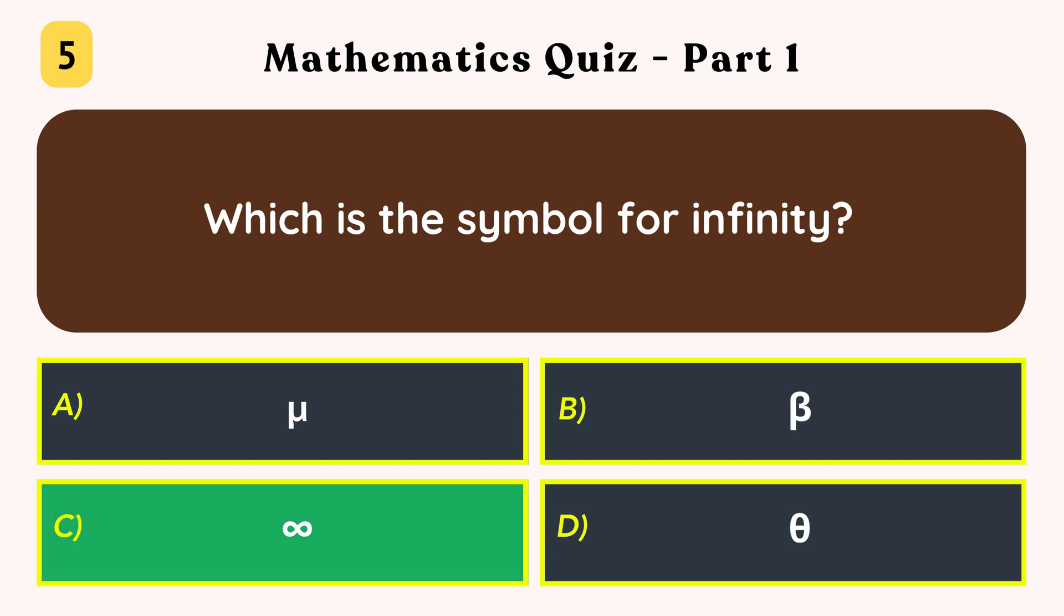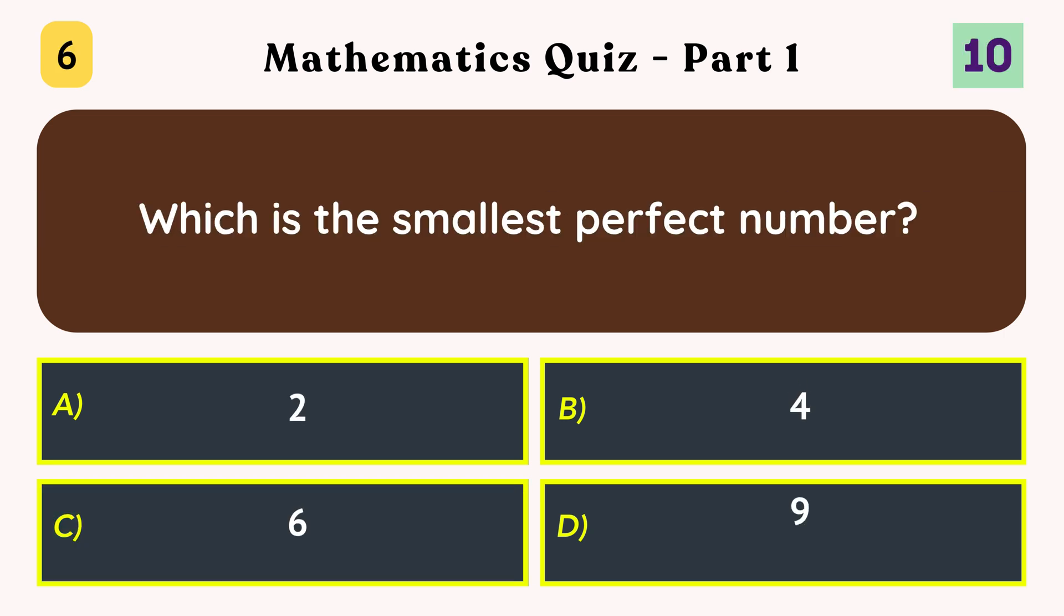Which is the symbol for infinity? Option C. Which is the smallest perfect number? Six.